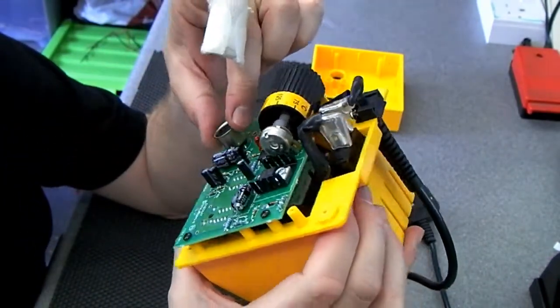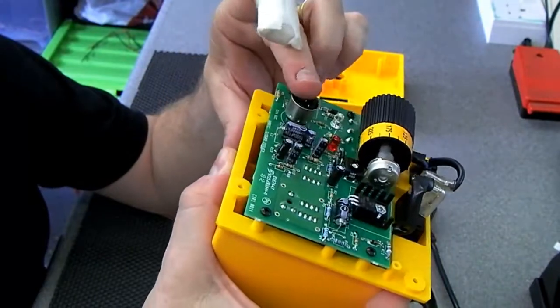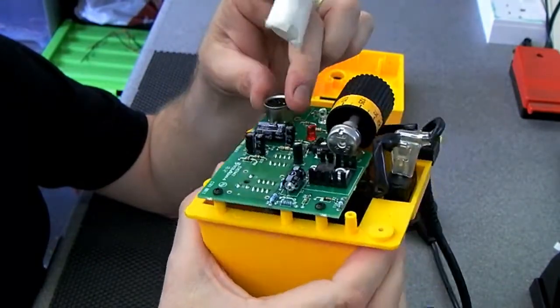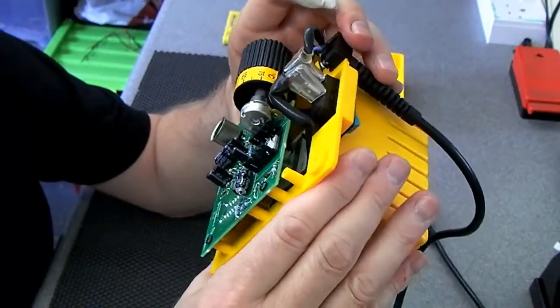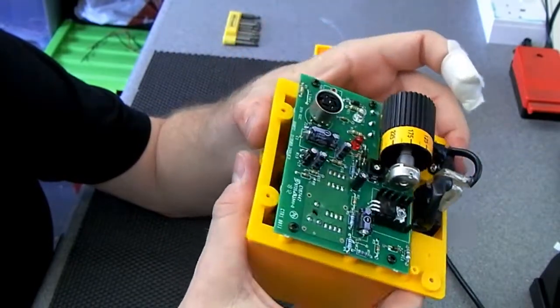Again, the DIN socket could be a weak spot but you're not going to be unplugging the iron very often. So I don't believe that would be a problem.